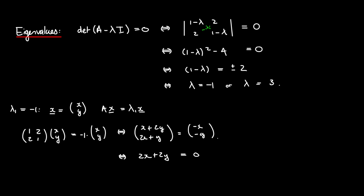In the second component, exactly the same equation comes out. So we're really just getting one linear equation. This tells us that x can be anything as long as y is equal to negative x, because the equation is the same as saying x equals negative y. So we can write our vector x-bar as t times (1, -1).